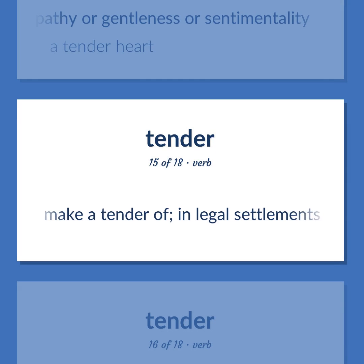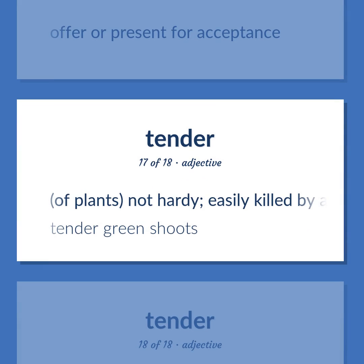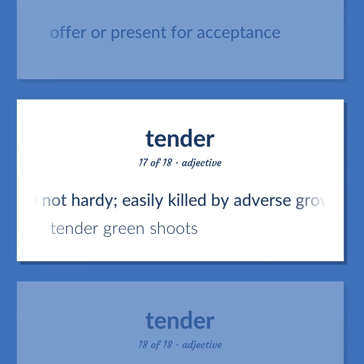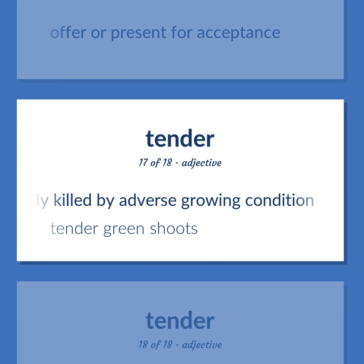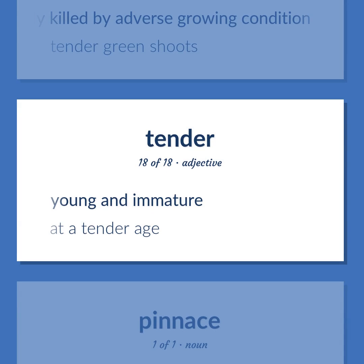Tender: To make a tender of, in legal settlements. To offer or present for acceptance. Of plants, not hardy; easily killed by adverse growing conditions — tender green shoots. Young and immature — at a tender age.